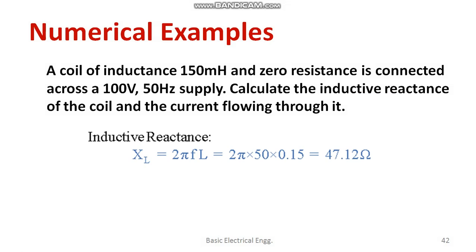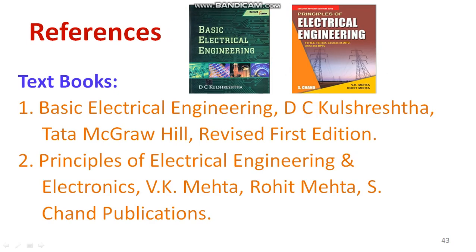XL = 2πfL = 2π × 50 × 0.15 = 47.12 Ω. Current I = V / XL = 100 / 47.12 = 2.12 amperes. In this session we recalled current through an AC inductive circuit, discussed the phasor diagram, defined inductive reactance, derived its equation, and established that inductive reactance is directly proportional to frequency.